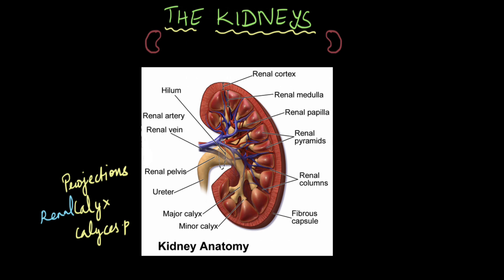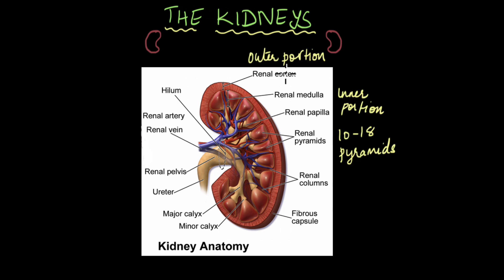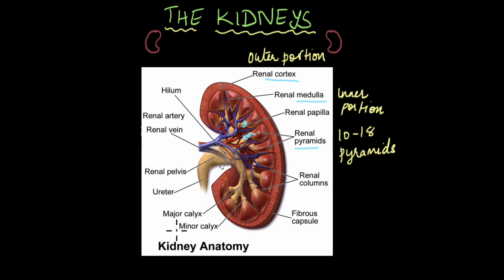To understand what these triangular structures are, we have to understand that the kidney is made up of two distinct portions: the outer portion known as the renal cortex, and the inner portion known as the renal medulla. These triangular structures are called renal pyramids. Each kidney has around 10 to 18 pyramids, and the calyces are located at the tip of these pyramids to collect the urine formed there. Whatever urine is formed in the medullary pyramids enters the calyces, then the renal pelvis, and out through the ureter.